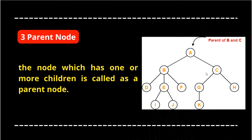Parent node: the node which has one or more children is called a parent node. In the example, A is a parent node because it has two children, B and C. B is a parent because it has three children D, E, F. C is a parent because it has two children G and H. E is a parent because it has two children I and J. G is a parent because it has one child K. F is not a parent because it doesn't have any children.